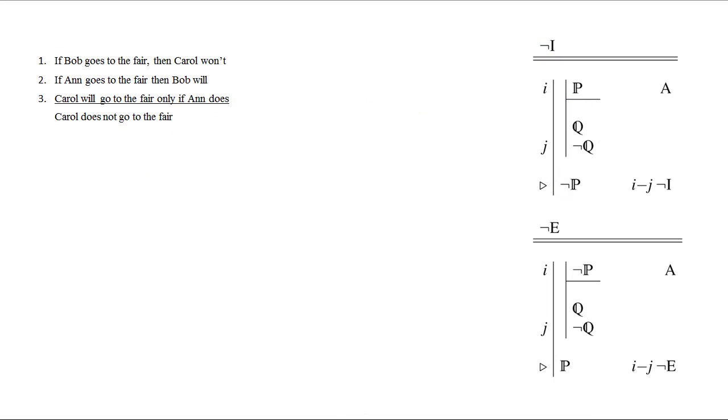Here's a simple argument which will allow us to illustrate the pattern. We've got three premises. If Bob goes to the fair, then Carol won't. If Ann goes to the fair, then Bob will. Carol will go to the fair only if Ann does. We can conclude, though it might not be initially obvious, that Carol does not go to the fair.